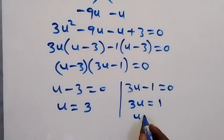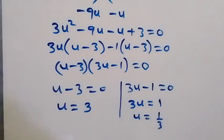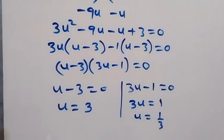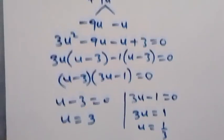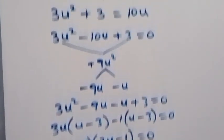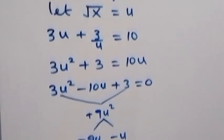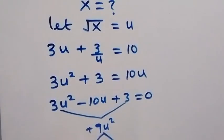From u - 3 = 0, we get u = 3. From 3u - 1 = 0, we get 3u = 1, so u = 1/3.